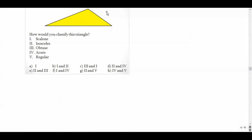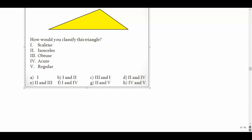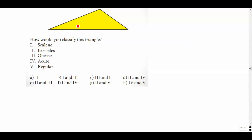How would you classify this triangle? No markings, so I assume it's scalene. And I've got an obtuse angle right here — scalene and obtuse, one and three. Remember, obtuse triangles are going to have two acute angles. These two angles are both acute, but it's that one obtuse angle that makes the whole triangle obtuse.